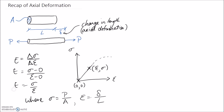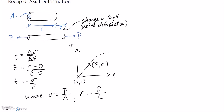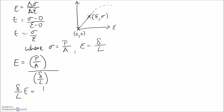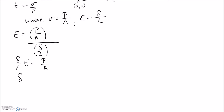Putting both equations into the Young's modulus equation and rearranging for axial deformation: E is equal to the stress P on A, divided by the strain delta on L. Rearranging, delta on L multiplied by E equals P on A. So delta on its own equals PL on AE. This is our main equation, where delta is the axial deformation or the change in length of the member.